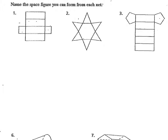What we're going to look at is how do you name a space figure from the net? In this figure, you can see that the two bases — the two bases that are going to be the same and parallel — are squares. So this is going to be a square prism, and the remaining faces are rectangles.